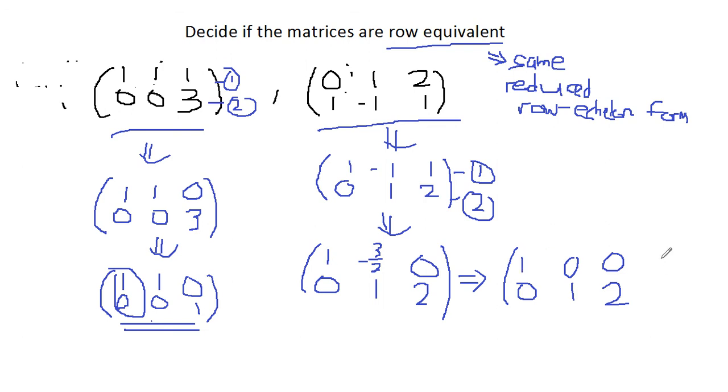So we got our system in reduced row echelon form because you can see 1 is the only non-zero integer here, and 1 also here. As you can compare here, you can see that their reduced echelon form is not the same, therefore not equal. Therefore they are not row equivalent.